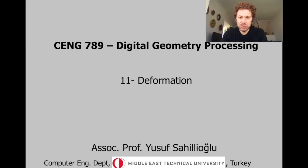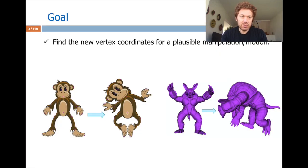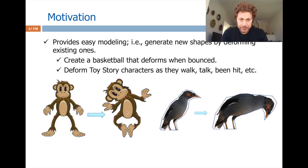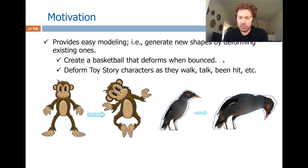Let's talk about mesh deformation, an essential topic in digital geometry processing. This is all about finding new vertex coordinates for a meaningful, plausible motion, either in 2D or 3D. There is interestingly complex math hidden behind a very simple, intuitive user interface, and we will talk about that math today in detail. The motivation is we will get new shapes basically by editing or reposing the existing ones.